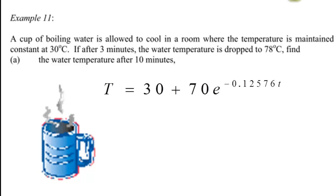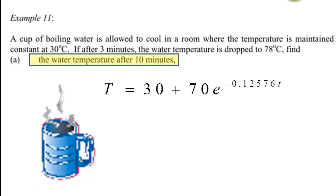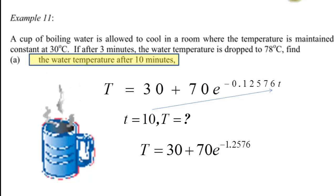So the temperature of the glass is T equal to 30 plus 70 e to the power negative 0.12576t, where t is the time in minutes. To find the temperature after 10 minutes, we substitute t equal to 10, giving temperature equal to 30 plus 70 e to the power negative 1.2576. Using a calculator, the temperature is 49.9 degrees Celsius, or approximately 50 degrees Celsius. That completes the answer.